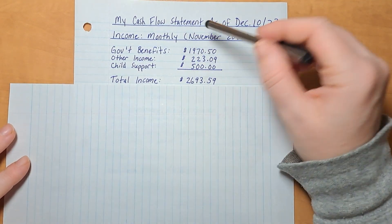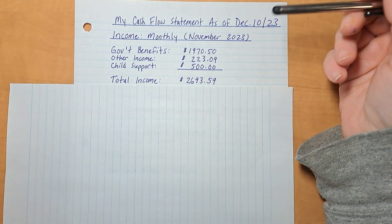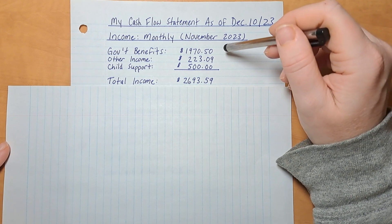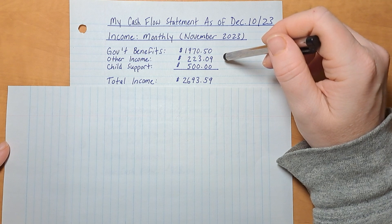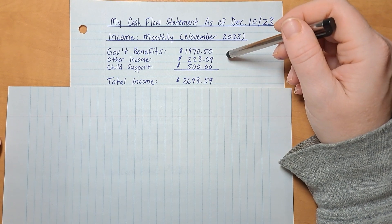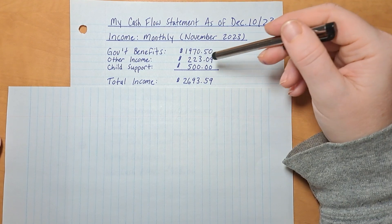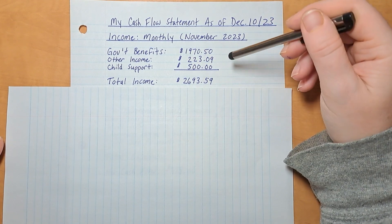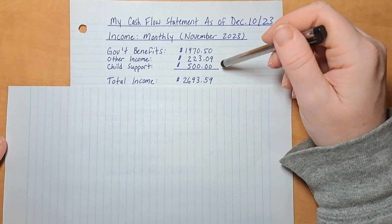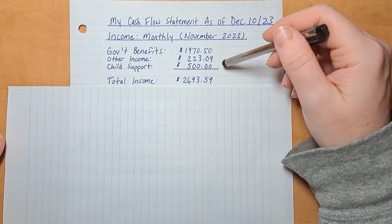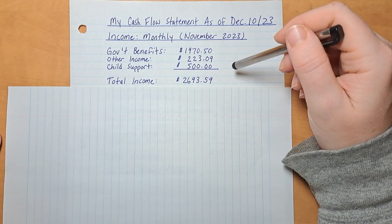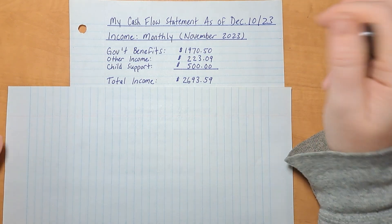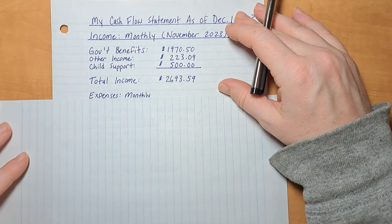My total income covers all the inflows that came in for the month of November. Government benefits — things like the Canada Child Tax Benefit — came to $1,970.50. Other income, which includes Google AdSense, Amazon Associates, and general income like side hustles or cash payments, was $223.09. Child support was $500 — I count that as income because I use it to support my kids. So my total income for November was $2,693.59.